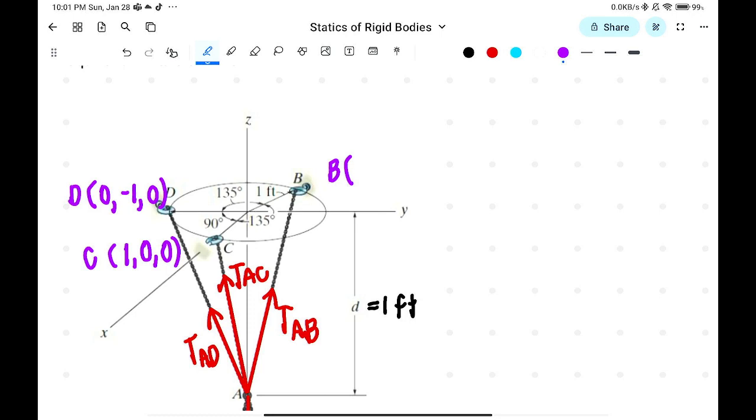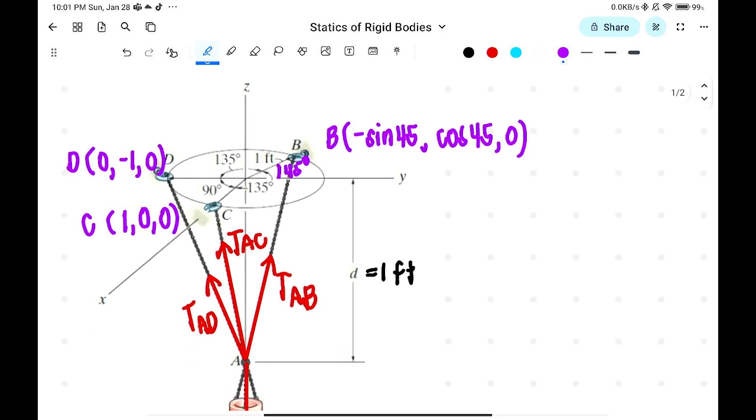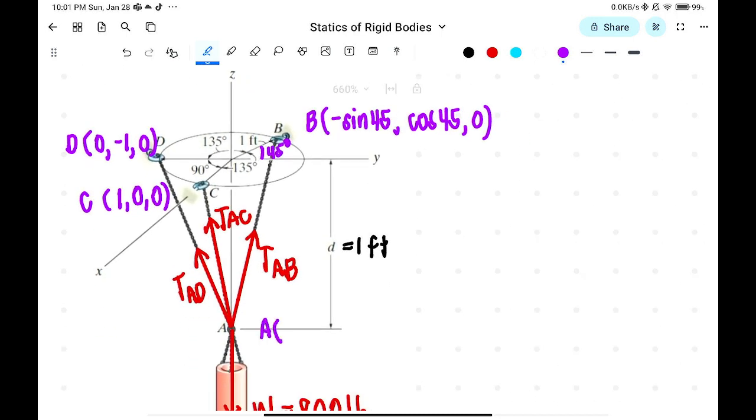Point B: since this is 135 degrees from the x-axis, that is 135 minus 90, which equals 45 degrees. So the x-coordinate is negative sine of 45, y is positive cosine of 45, and z is 0. Point A has coordinates 0, 0, negative 1, because it's below on the z-axis.